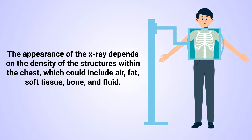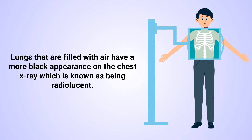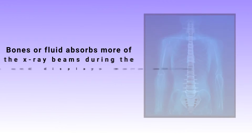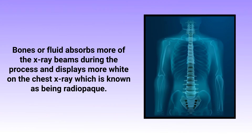The appearance of the x-ray depends on the density of the structures within the chest, which could include air, fat, soft tissue, bone, and fluid. Lungs filled with air have a more black appearance on the chest x-ray, known as being radiolucent. Structures such as bones or fluid absorb more of the x-ray beams and display more white on the chest x-ray, which is known as being radiopaque.